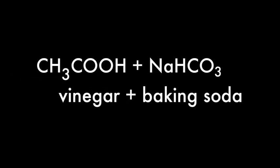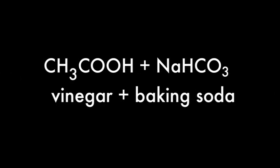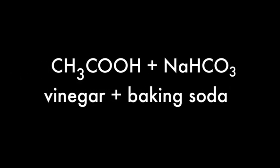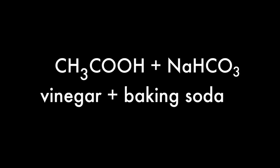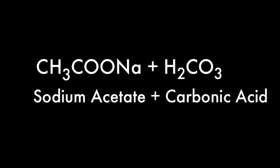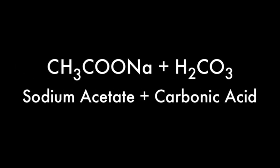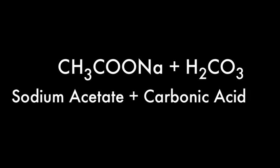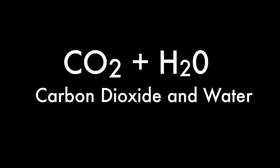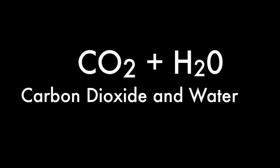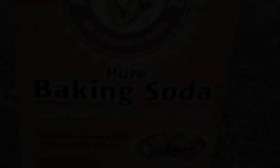Now we're going to talk about making your own volcano at home and the chemistry behind it. The most commonly used reaction to simulate an explosion is that between vinegar and baking soda. Here you see the acetic acid — vinegar — and the sodium bicarbonate, or baking soda. They form sodium acetate and carbonic acid. The next step in this multi-step double replacement reaction is that the carbonic acid decomposes into carbon dioxide and water, which causes the fake explosion you're about to see.